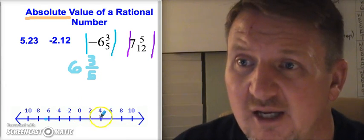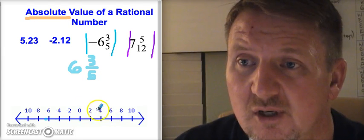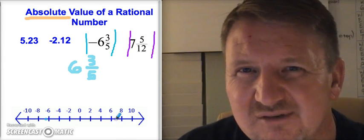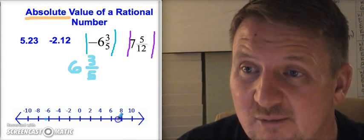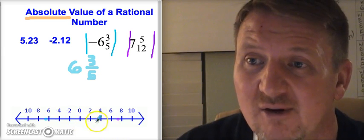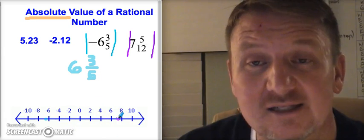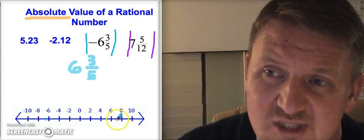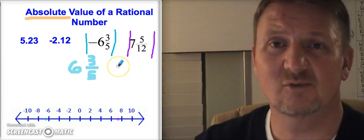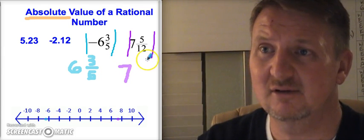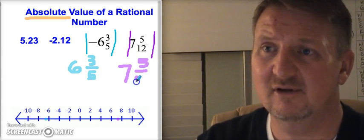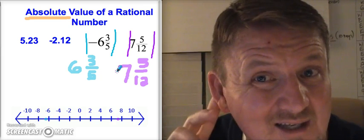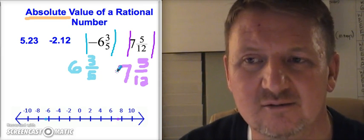For seven and five-twelfths: I start at zero and count to the right — two, four, six — and seven is right between six and eight. Five-twelfths is just shy of halfway between seven and eight. Counting from zero: two, four, six, seven places plus a little bit more. So the absolute value of seven and five-twelfths is seven and five-twelfths. Notice there's no negative sign, because absolute value is always positive — please remember that!